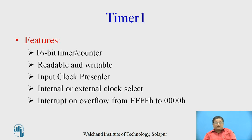The timer registers are readable and writable. Timer 1 also has a prescaler at the input clock. The prescaler is mainly used to change the frequency of the clock, and it can be used to get a greater amount of delay while keeping the same clock frequency and same initial count.